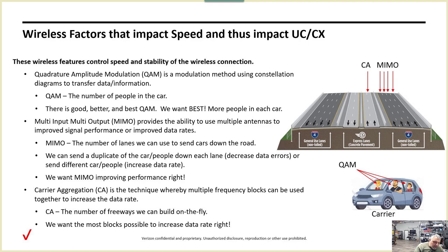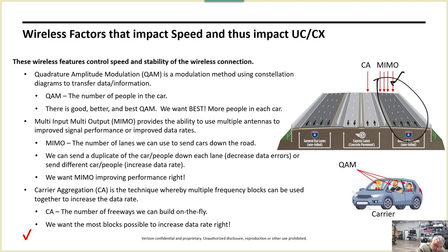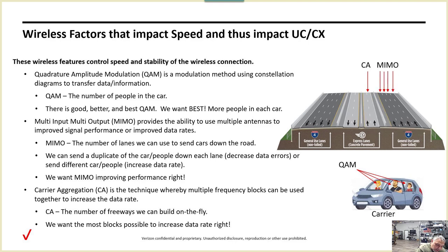Then there's carrier aggregation. Carrier aggregation is when we take multiple slices of frequencies leased from the government — the FCC — and bring up more freeways. We bring up carrier aggregation on an as-needed basis, such as when downloading or uploading a movie. Depending on the 3GPP release and technology, we can have multiple carrier aggregation freeways, each with MIMO lanes inside them.